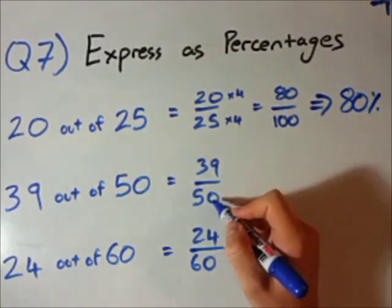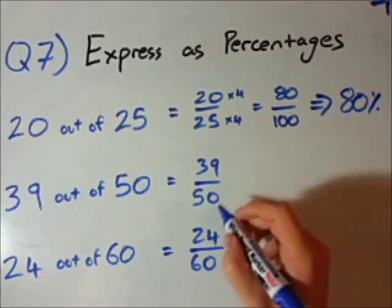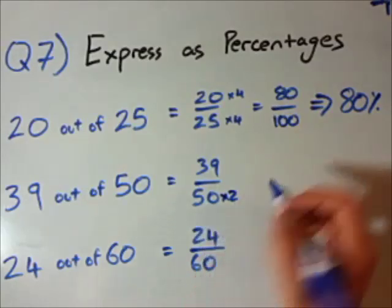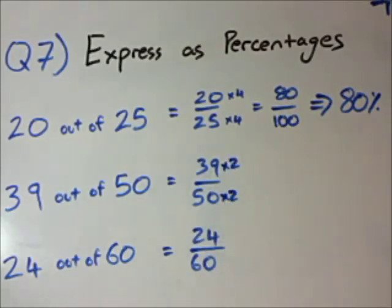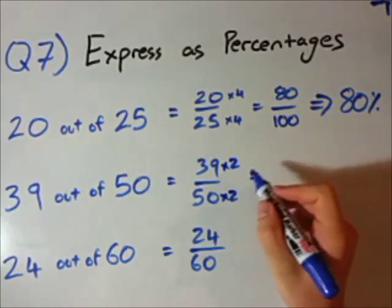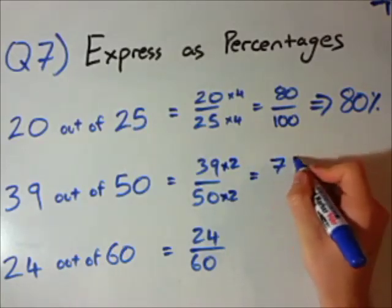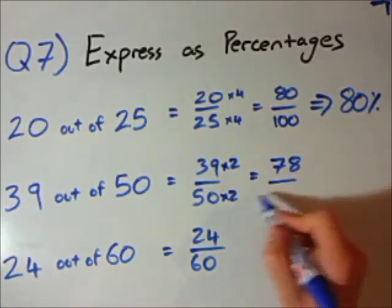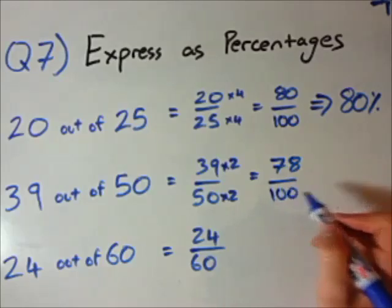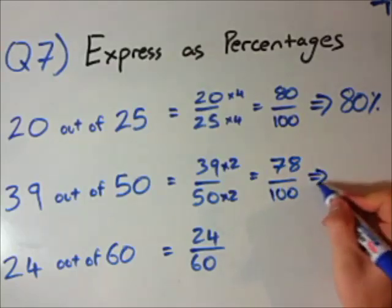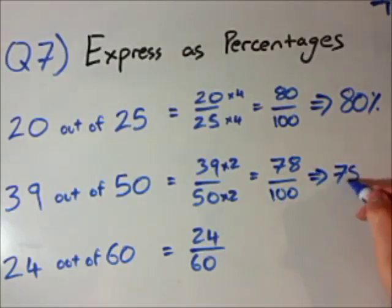Let's do the same thing here. Let's get this denominator being 100. So, I'm just going to times it by 2 to times 50 and 100. I'm going to times the top by 2 as well. 39 times 2 is 78 over 100. My denominator is 100. Simple. My percentage, 78%.